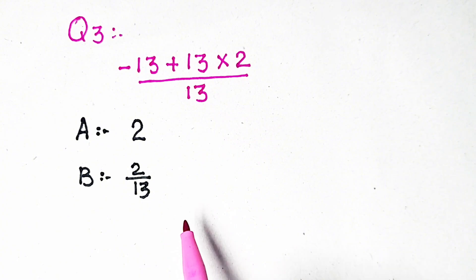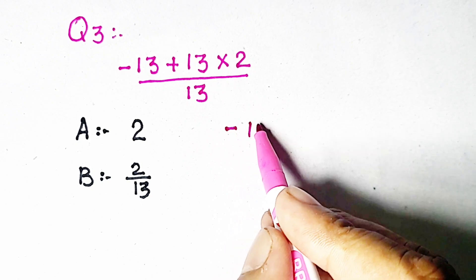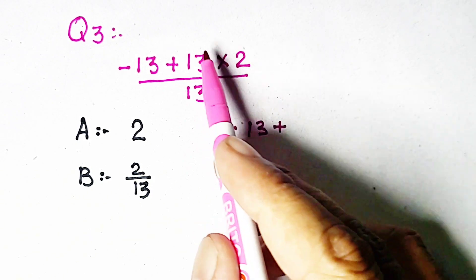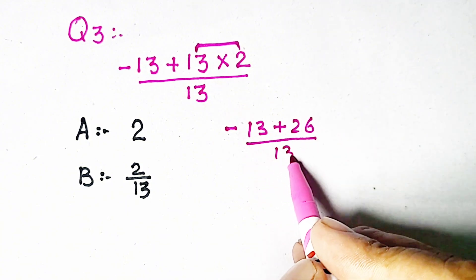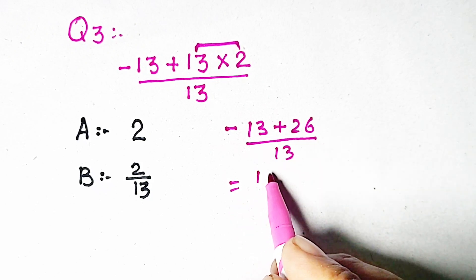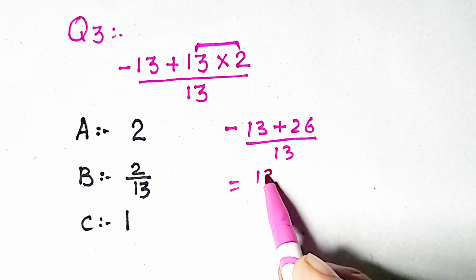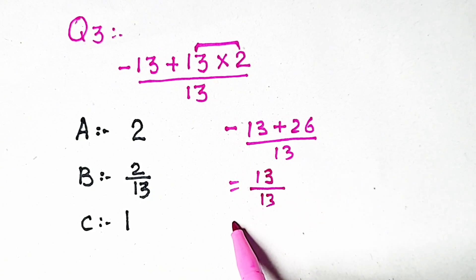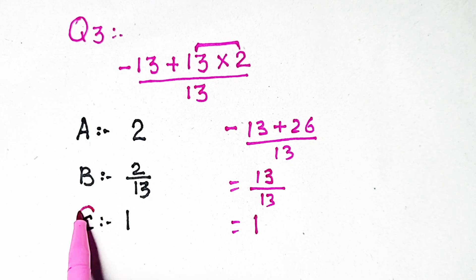We calculate it correctly by performing multiplication first: minus 13 plus 13 times 2 equals 26, divided by 13. Then minus 13 plus 26 divided by 13 gives 13 divided by 13. These are the same numbers, so the answer is 1. Option C is correct.